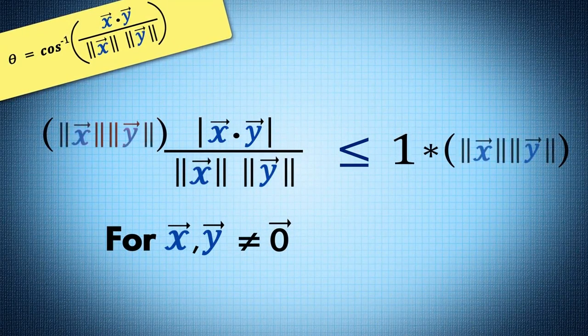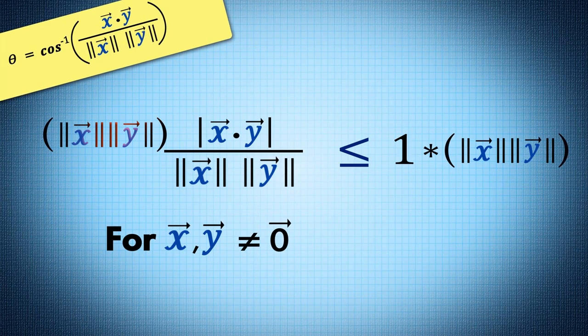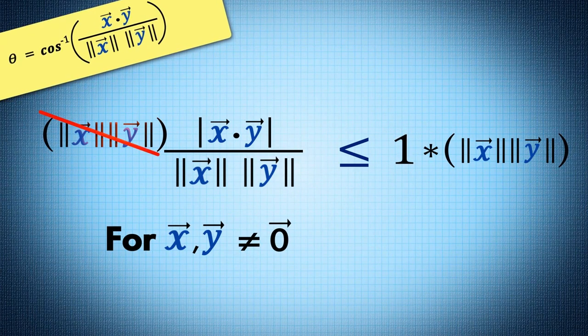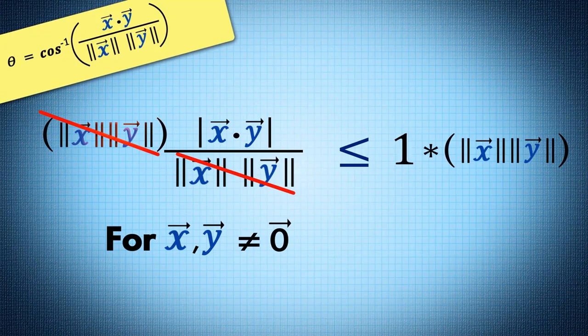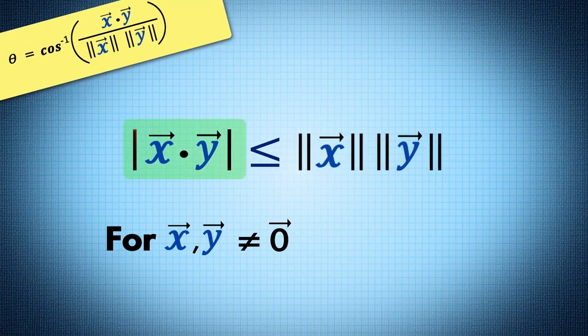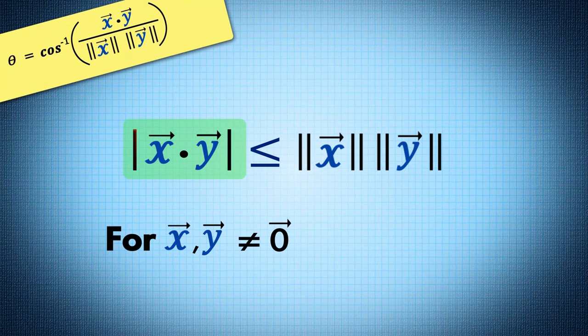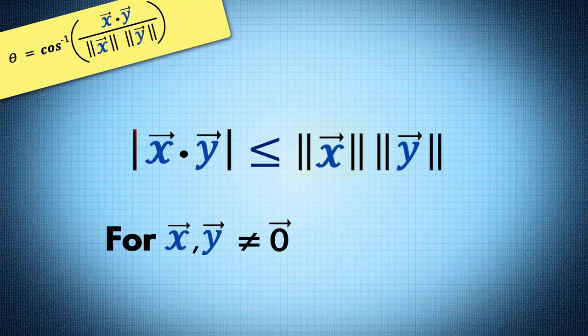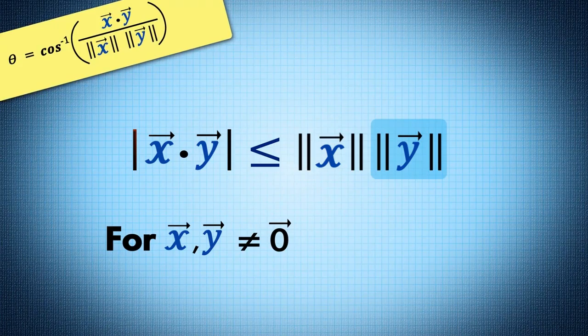Multiplying both sides by norm of x times norm of y, the statement we are trying to prove is equivalently the absolute value of x dot y is less than or equal to norm of x times norm of y.